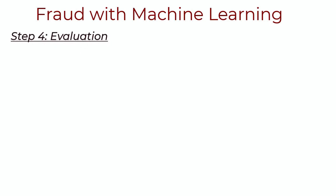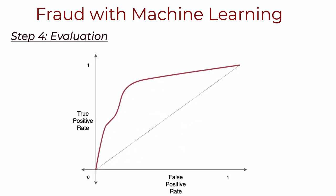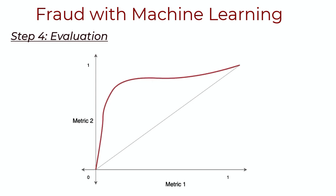The final step is evaluating the model. For fraud, false negatives are bad — we need to call out fraud when it occurs. But we also don't want to flag too many legitimate transactions as fraudulent. We can typically look at ROC curves for balance, which are plots of true positive rate versus false positive rate — ideally the curve should hug the top right corner. In some cases, true positive rate and false positive rate may be too generic, and you'd want to plot more company-specific metrics.